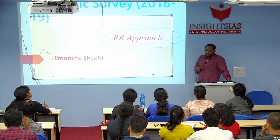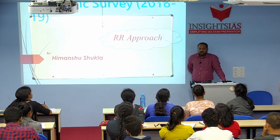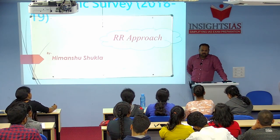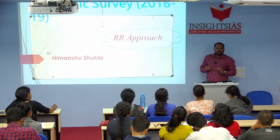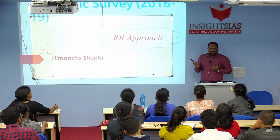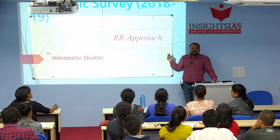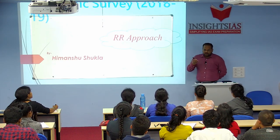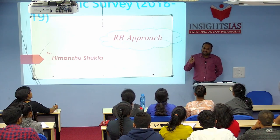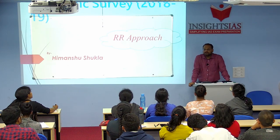From an exam perspective, if you analyze the GS3 syllabus — which is mostly economy, industry, and infrastructure — approximately 80 to 90 marks, or roughly 100 marks, can directly or indirectly be linked to the Economic Survey. You can use the data, the ideas, and the analysis across temporal lines and sectoral lines — primary, secondary, and tertiary sectors.